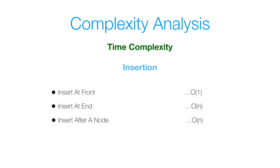Now let's move on to the complexity analysis. For time complexity of insertion: inserting at the front is a constant time operation — we just set the new node's next to head and head to the new node. Inserting at the end requires traversing the entire list, so that's a linear time operation. Similarly, inserting after a given node is linear time in the worst case, since we may need to traverse the entire list.